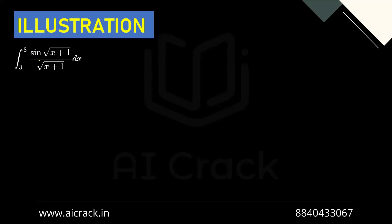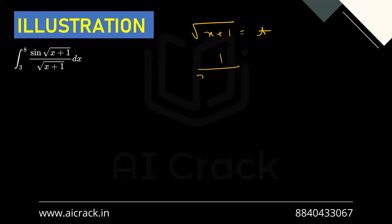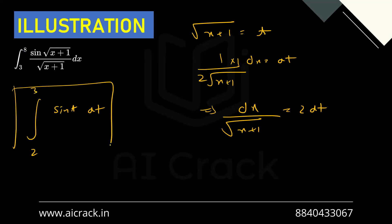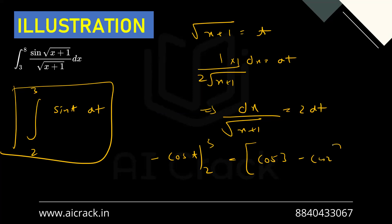Now let's solve this example: integral from 3 to 8 of sin(√(x+1)) / √(x+1) dx. We can see this is a composite function and √(x+1) is the argument. We also have dx/√(x+1). So the obvious substitution is √(x+1) = t. Differentiating: 1/(2√(x+1)) · dx = dt, which gives dx/√(x+1) = 2dt. This integral becomes the integral of 2sin(t)dt. For limits: when x = 3, t = 2; when x = 8, t = 3. Integrating sin(t) gives −cos(t) from 2 to 3, which becomes −(cos3 − cos2). This should be our answer.